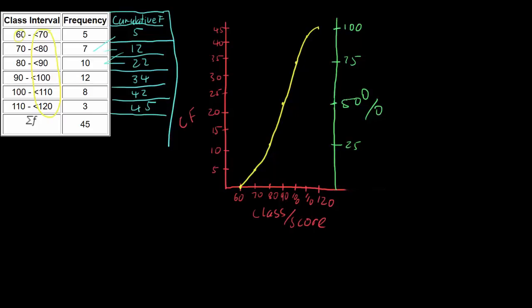To find the median, we go horizontally from 50% across to the curve, then down to the horizontal axis. That gives a median of around 90. So the median is approximately 90. In summary: to find the median from a grouped data table, create a cumulative frequency column, plot an ogive, add a second axis for percentage, then read off the value at 50%.